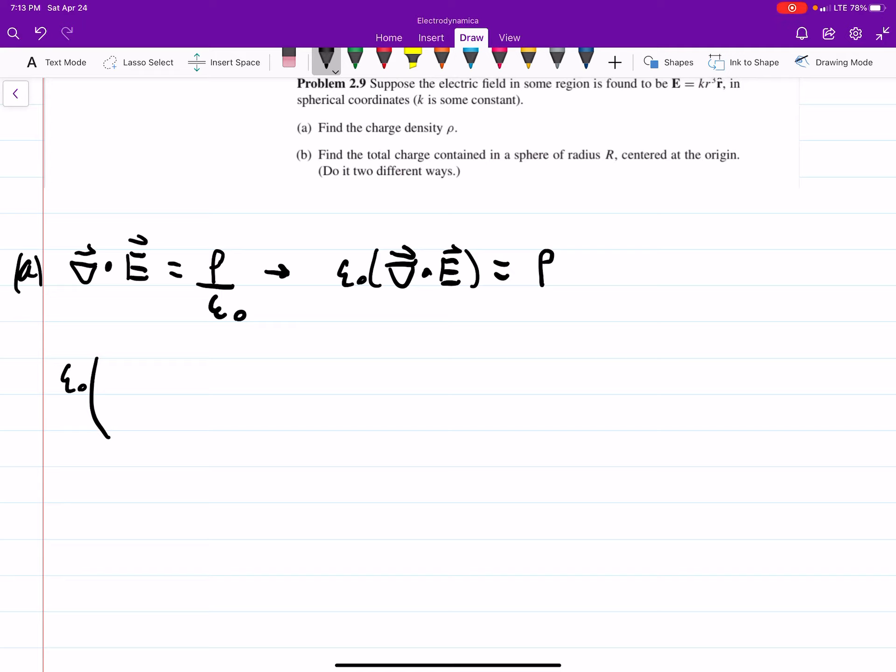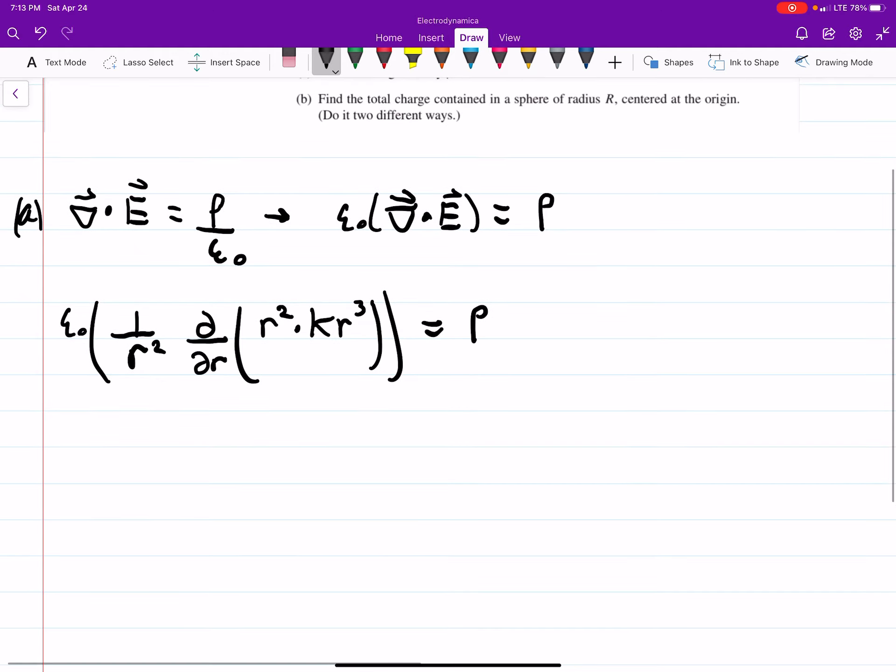Now this is in spherical coordinates, so we're going to have to do the divergence in spherical coordinates. That will presumably be given, and for the r-coordinate, it's 1 over r-squared d by dr r-squared times kr-cubed. And this is equal to rho.